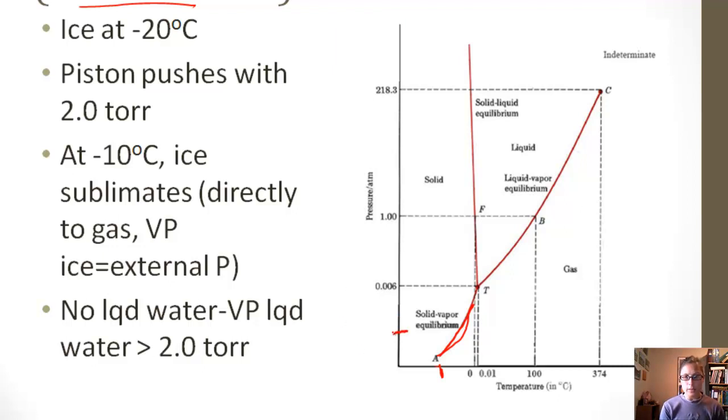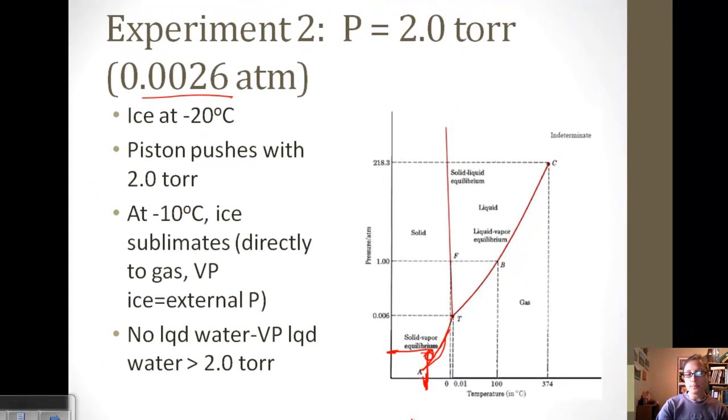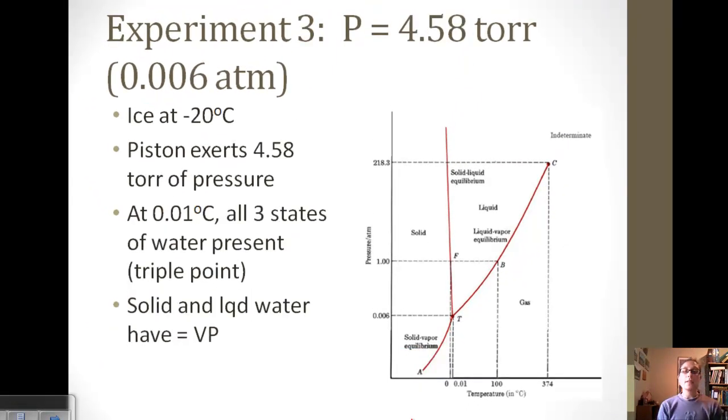Once we have reached 2 torr, or that 0.0026 atmospheres, we're reaching that sublimation point, where the vapor pressure of the ice equals the external pressure. There's no liquid water at this point, only solid to gas. That's because the vapor pressure of liquid water is greater than 2 torr. Since we haven't gone above 2 torr, we can't have any liquid.